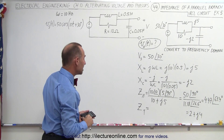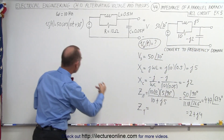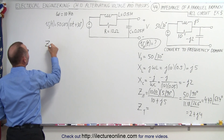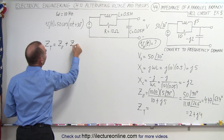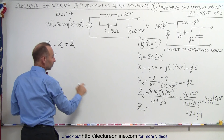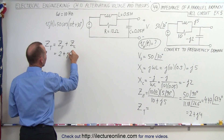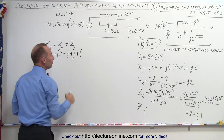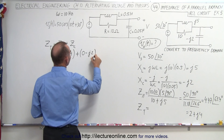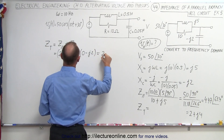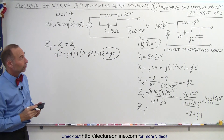Now I need to find the total impedance by adding the parallel branch impedance and the capacitor impedance together. Z total equals the parallel branch impedance, 2 plus j4, added to the capacitor impedance, 0 minus j2. When we add those together, we get 2 plus j2. This is the total impedance of all three components combined.